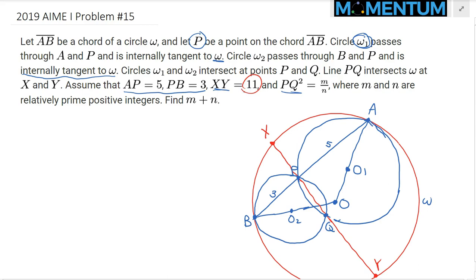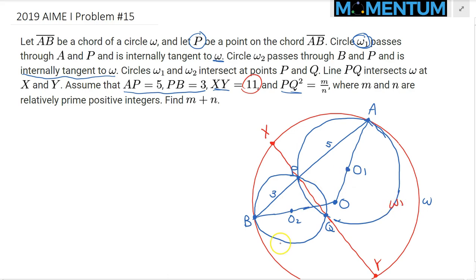Because PQ is the radical axis of omega 1 and omega 2, it will be perpendicular to the line segment O1O2 — so this is a 90-degree angle. Now we can begin.